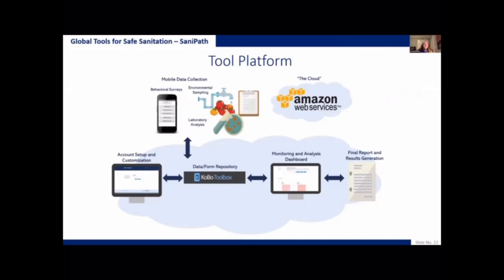The tool platform manages all aspects of a SaniPath deployment. We use mobile data collection using mobile phones or tablets, and the environmental analysis data from the laboratory is also collected using mobile data collection. This goes into a database or repository on the Amazon web server. There is also a way to set up an account and customize that account for your particular city, and all of the analysis of the data is done on the database on the web.